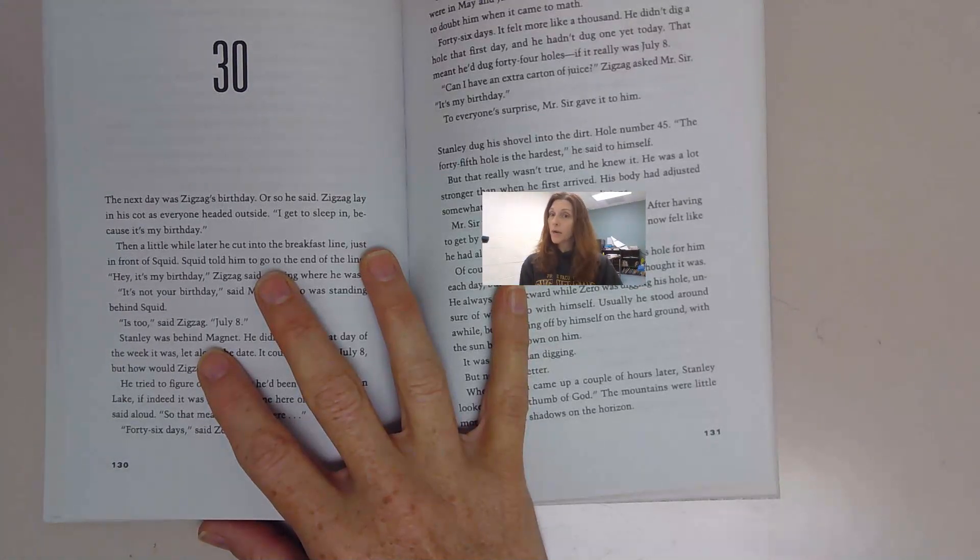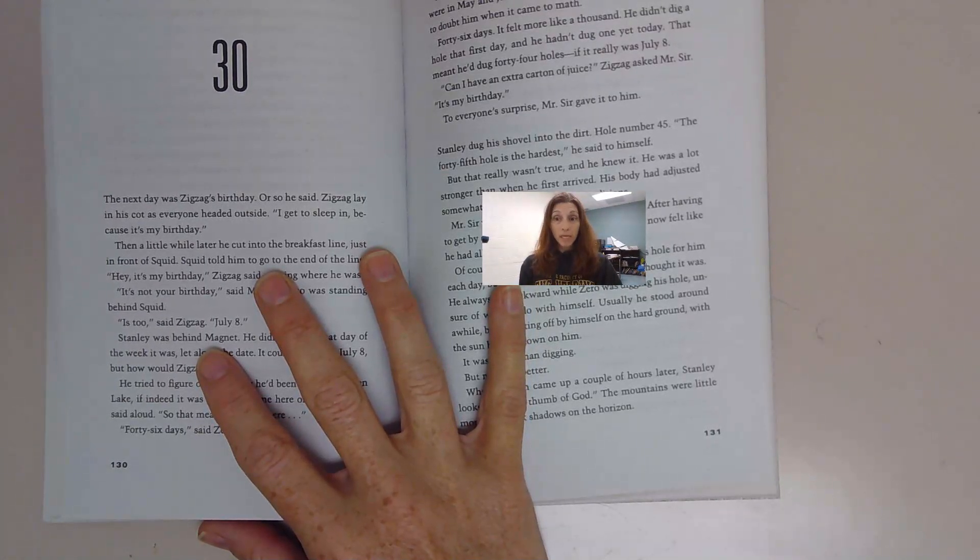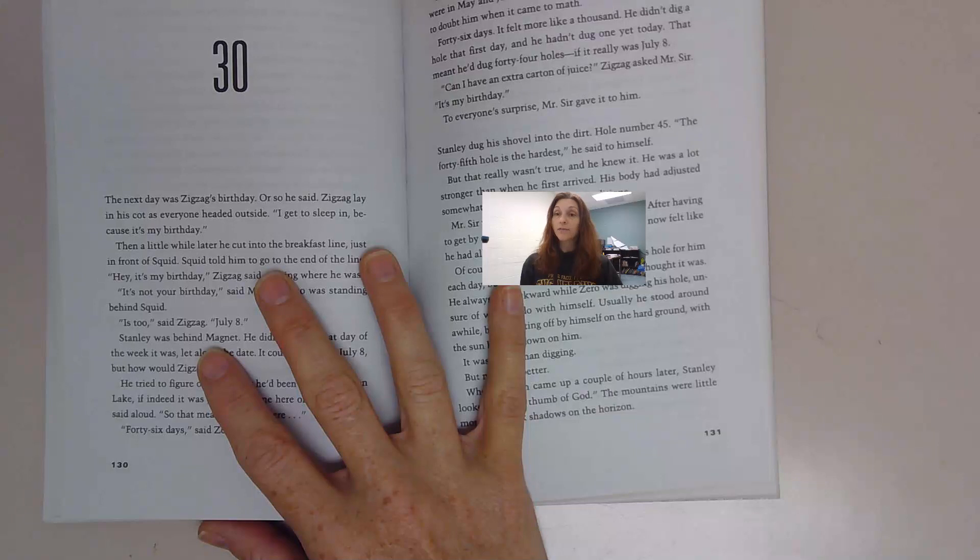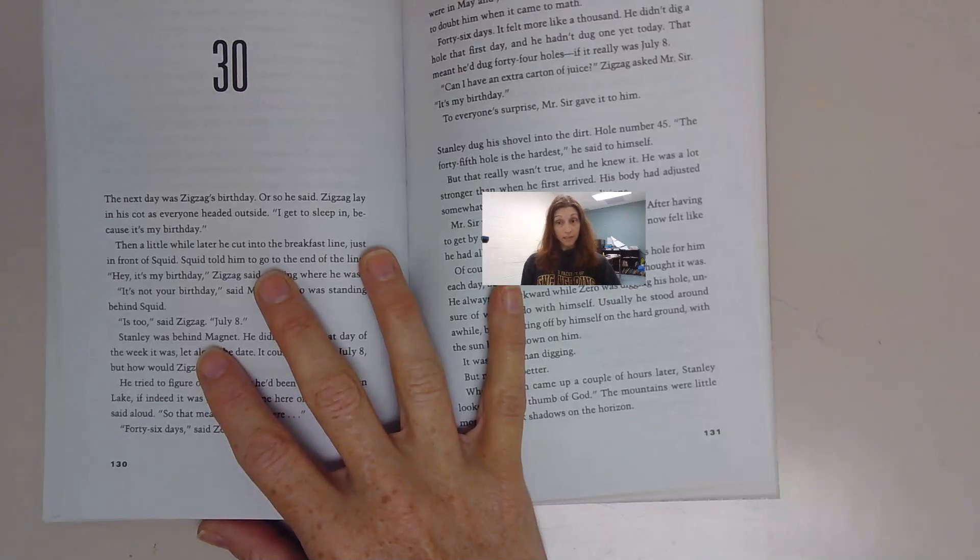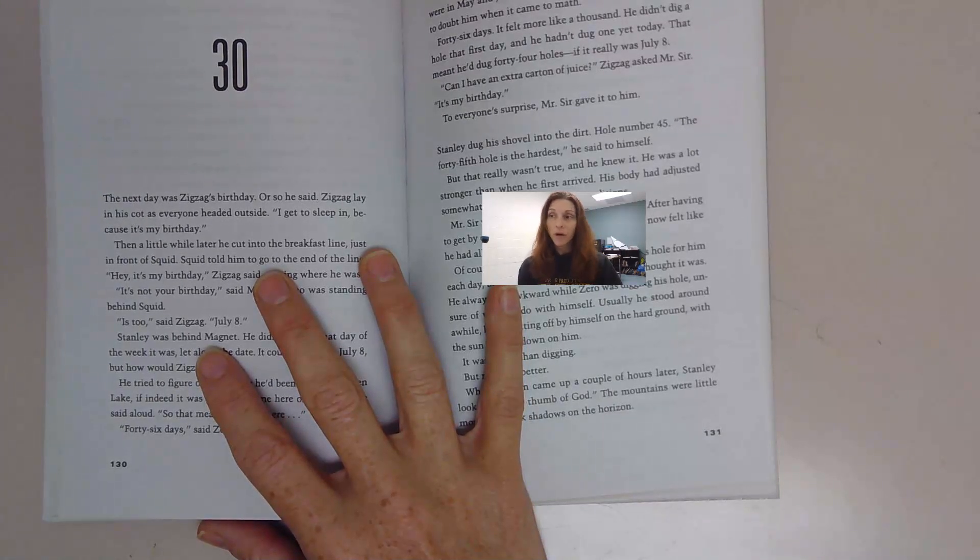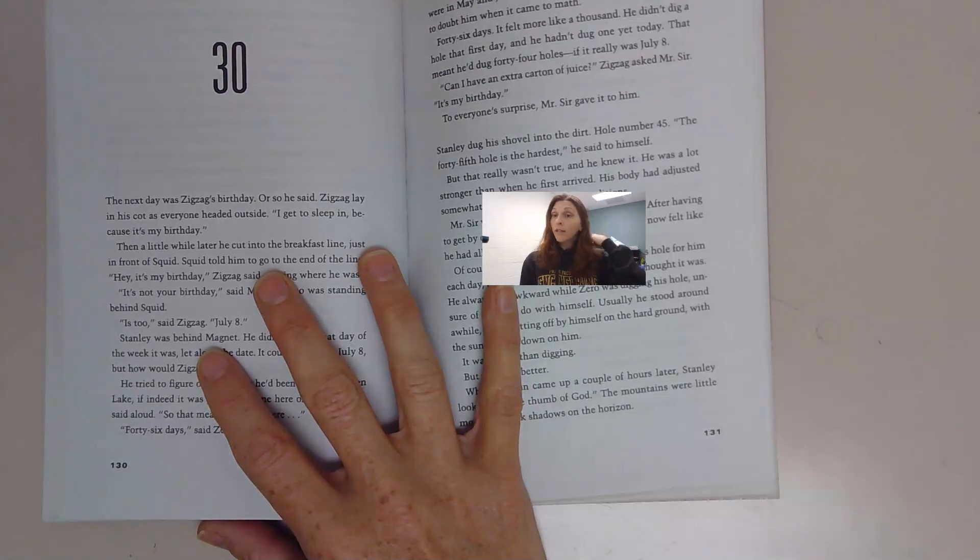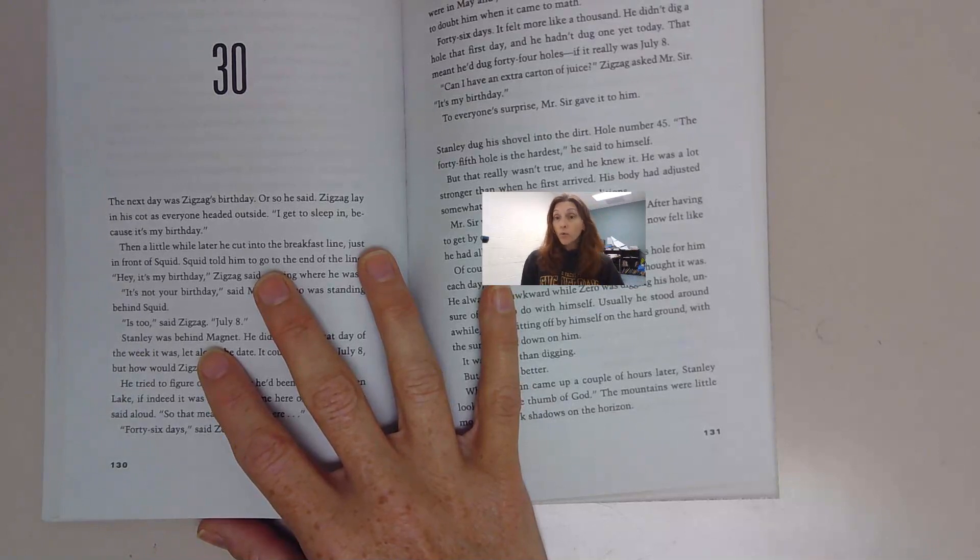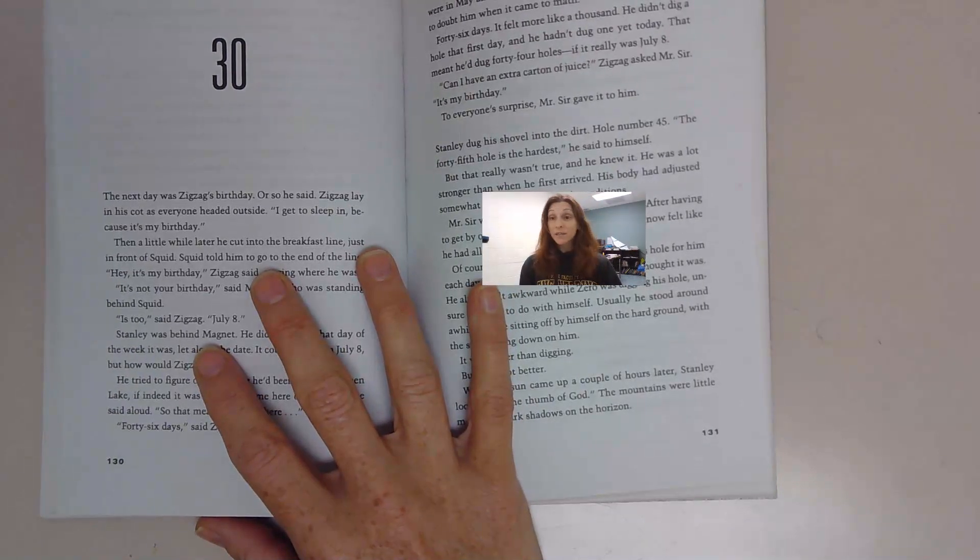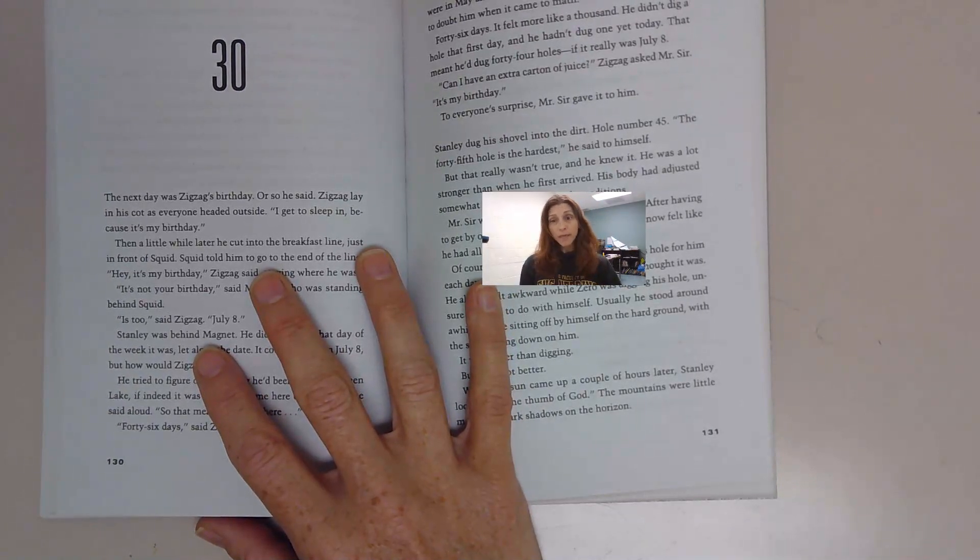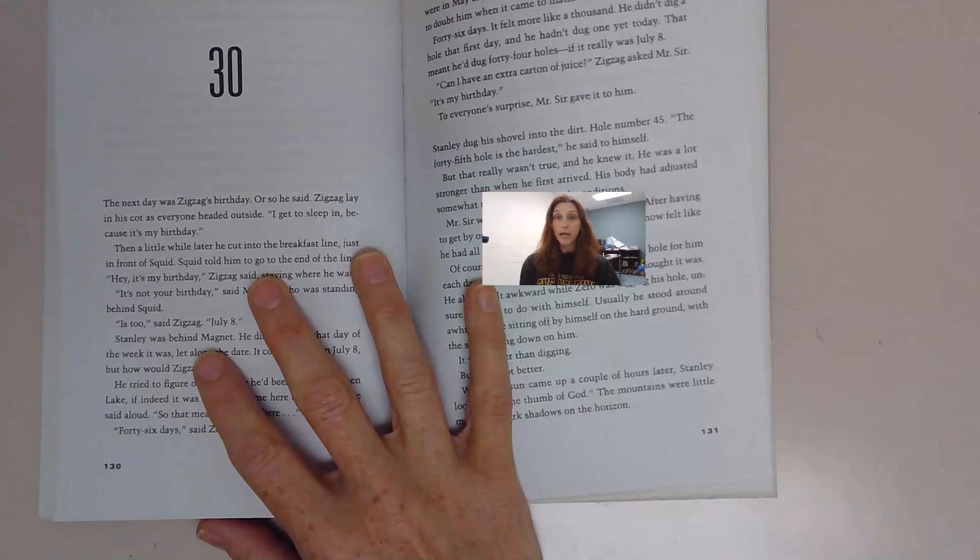So we have learned about KB, the initials standing for Kate Barlow, Kissin' Kate Barlow, who was Miss Catherine Barlow, a school teacher, who then became an outlaw when the man that she loved was killed because he was black. She became very angry and became an outlaw.